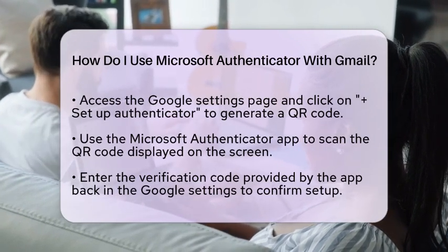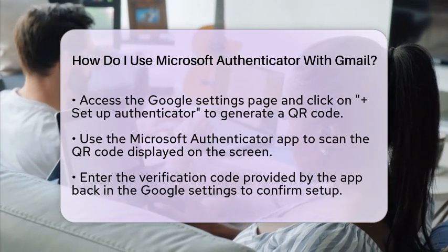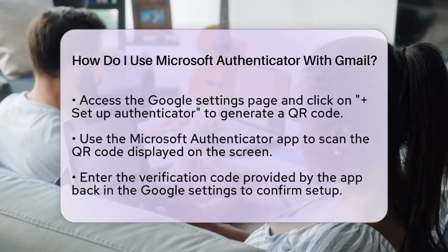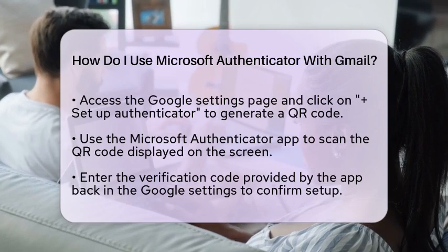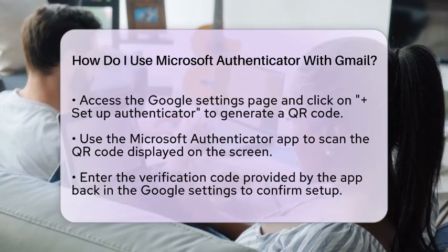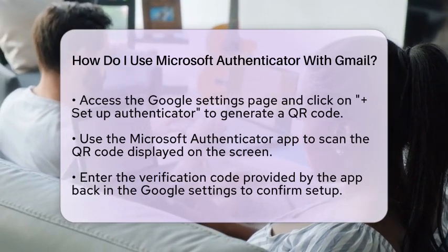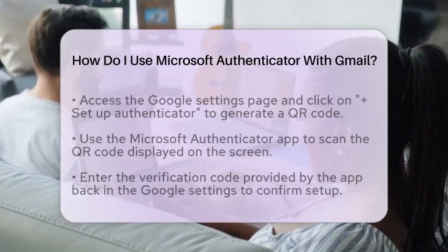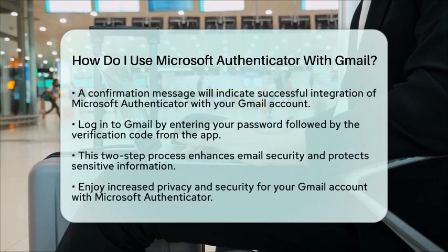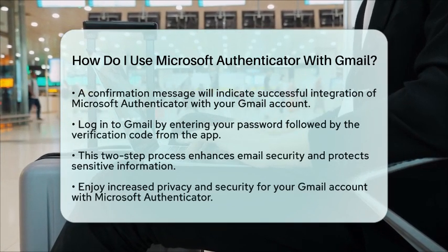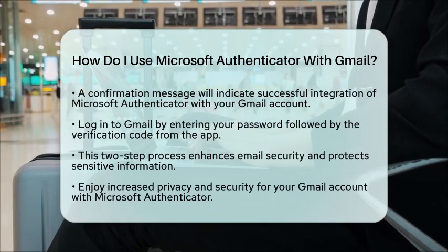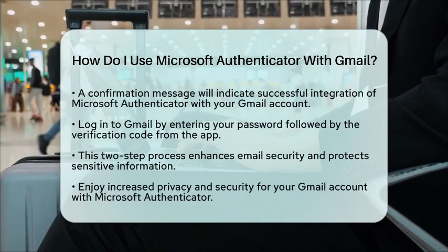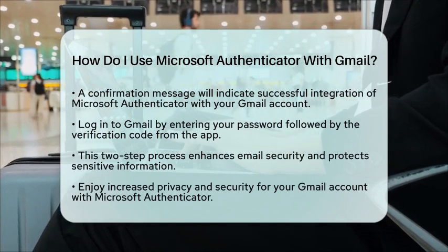Now let's talk about how to use Microsoft Authenticator with Gmail. Whenever you log into your Gmail account, you will first enter your password. After that, you will need to provide a verification code from the Microsoft Authenticator app. This two-step process ensures that even if someone has your password, they cannot access your account without the verification code from the app.